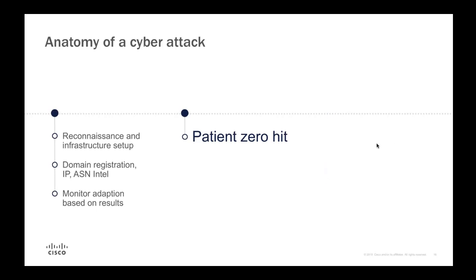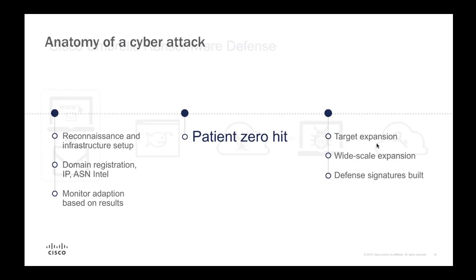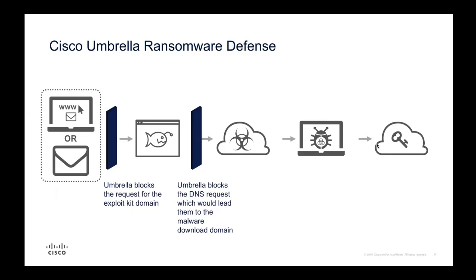From the other side of the coin, before an attack is launched, the attacker has to spin up servers on the dark internet — domains need to be registered, IPs and ASNs allocated. Although threats continue to increase in sophistication, attackers often reuse the same infrastructure across multiple attacks because it's expensive to build. This means they leave behind cyber fingerprints. Umbrella uses data from our global network and statistical models to uncover this information and stop attacks before patient zero is even hit.